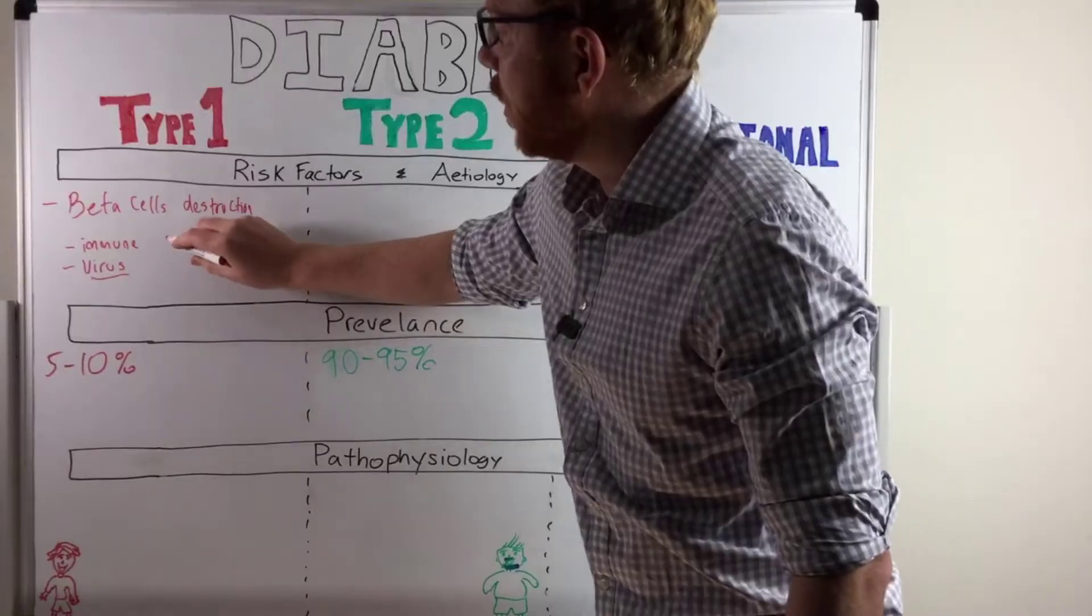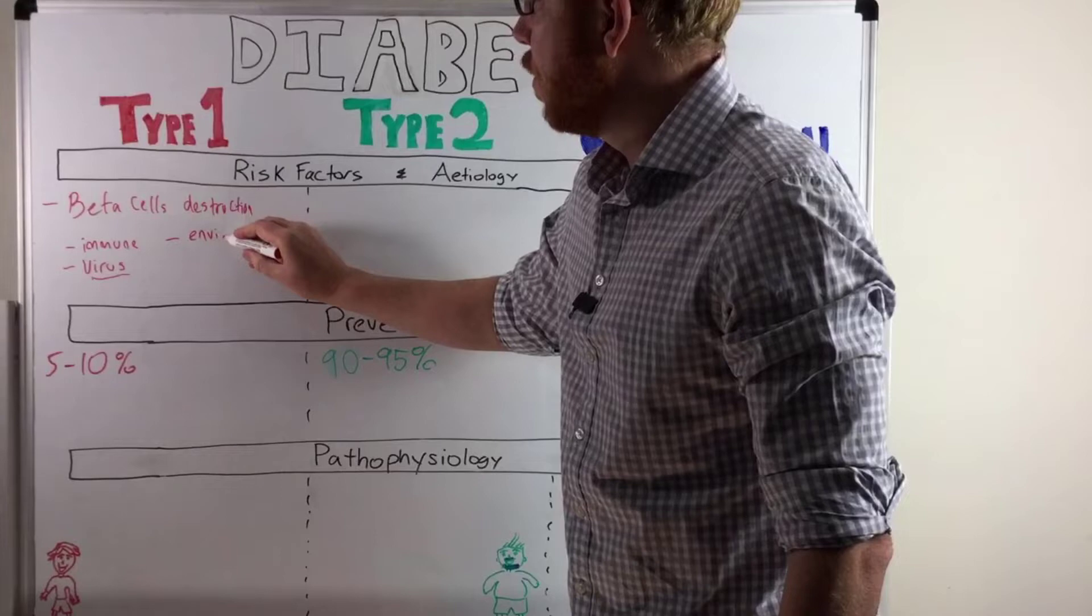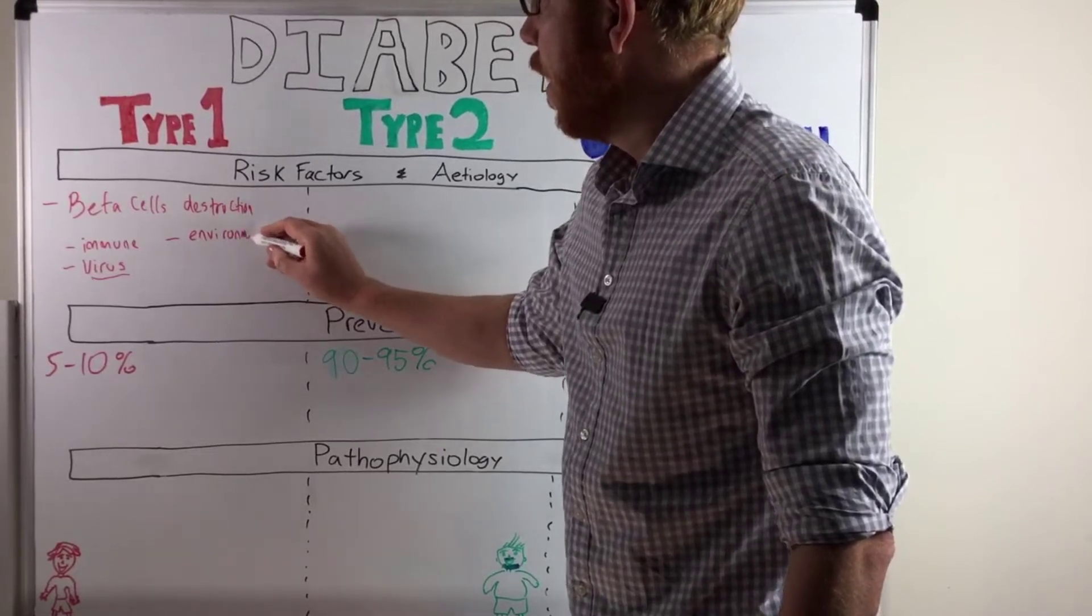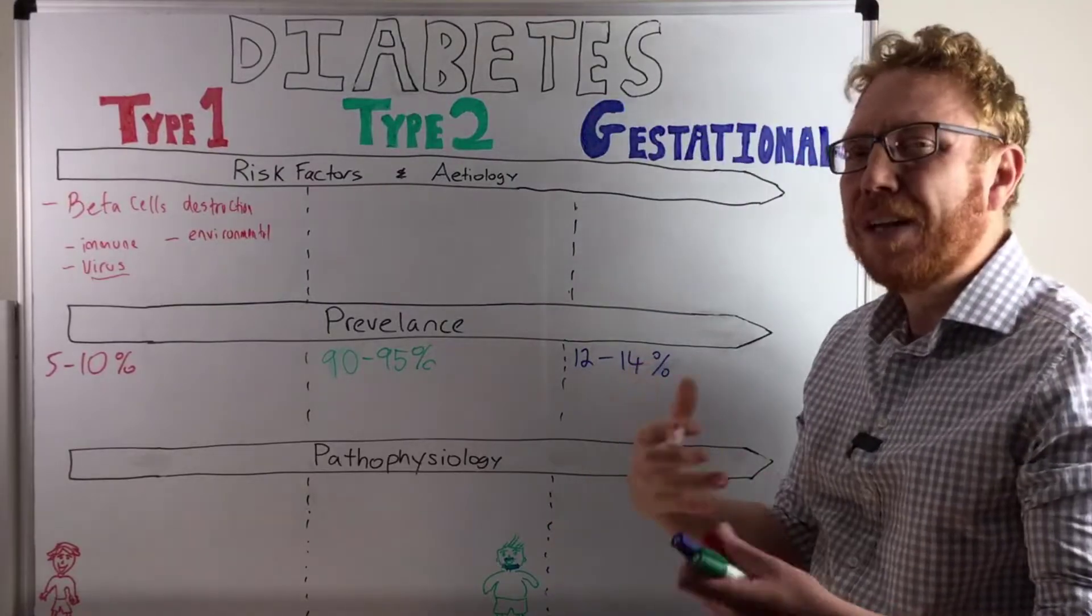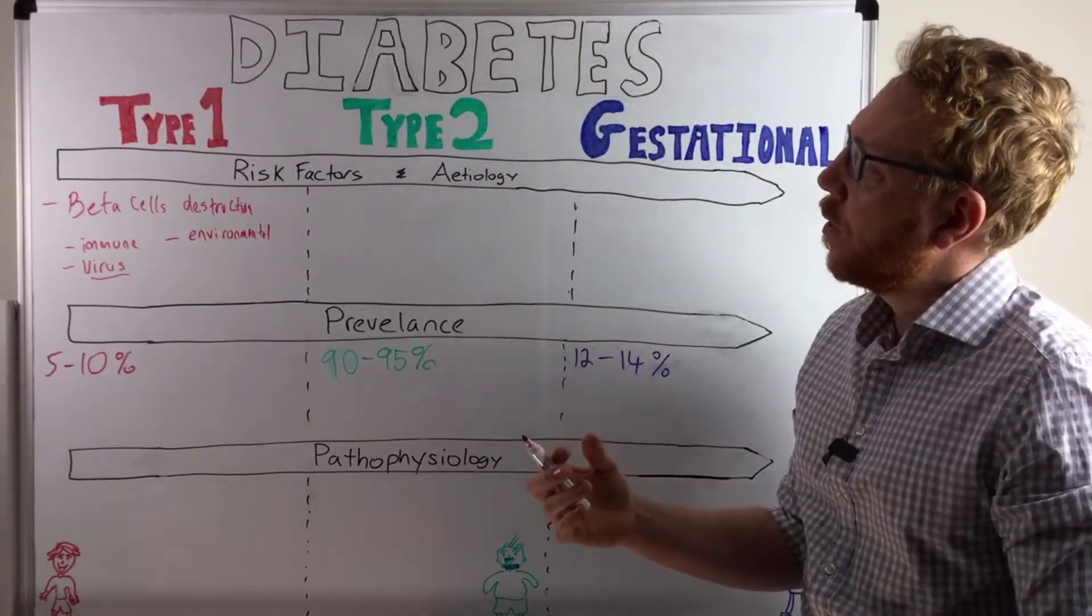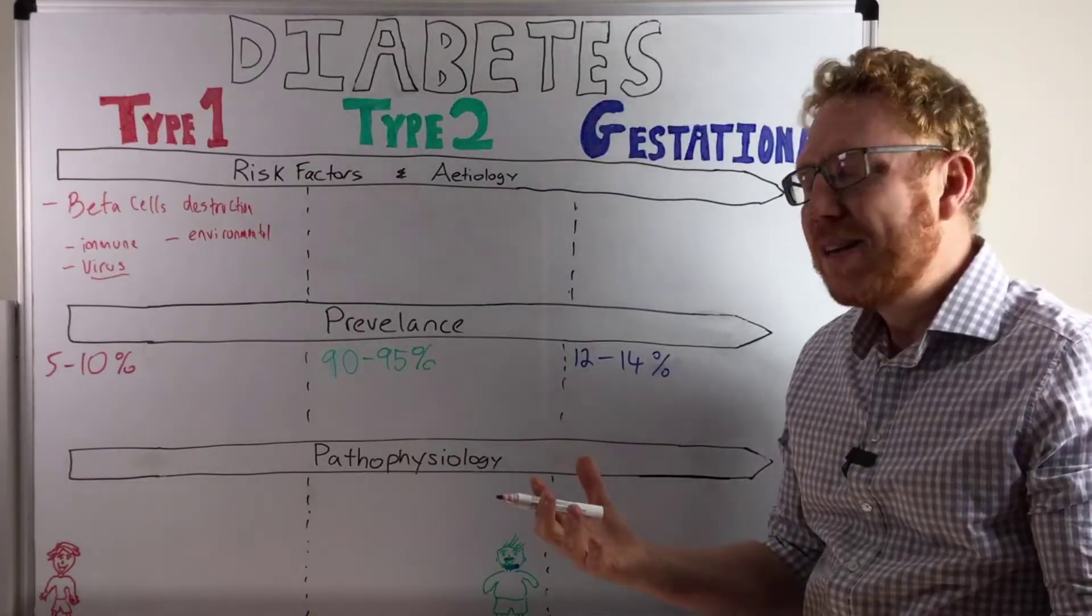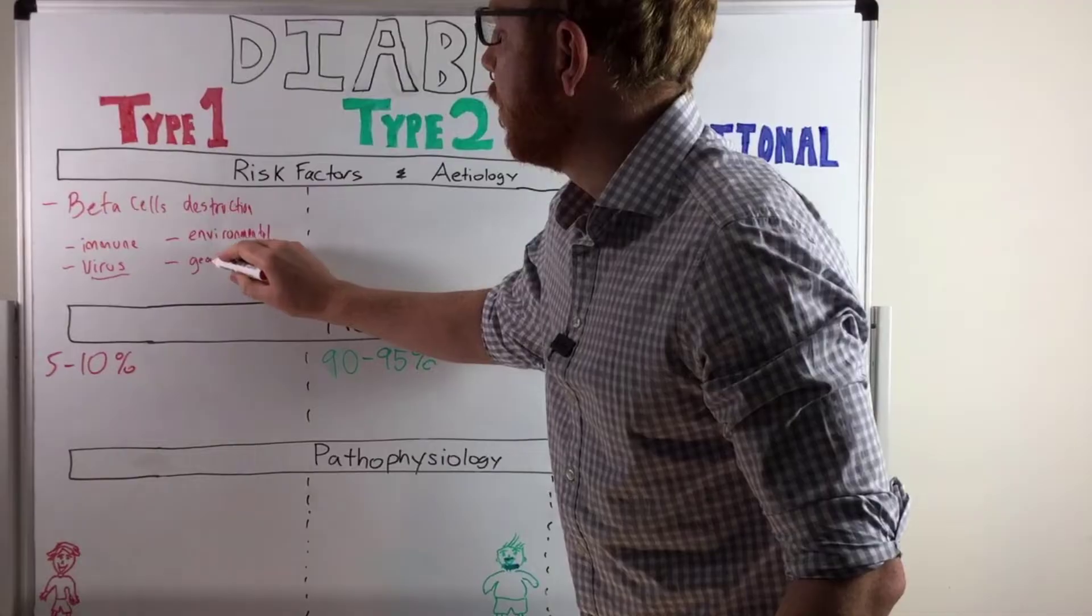Other things just to be aware of, there seems to be environmental risk factors. So things like cow's milk, possibly an allergy indication or reaction. There's also seems to be something to do with vitamin D. And there's also something geographical.